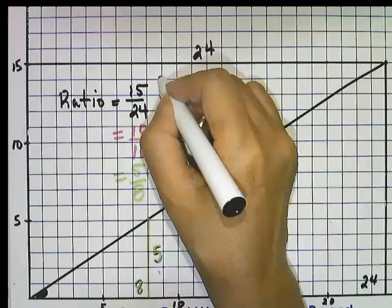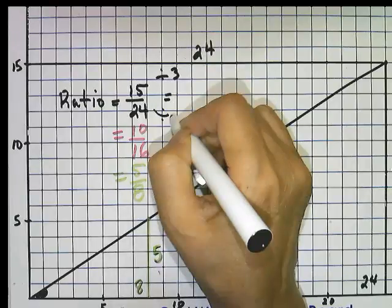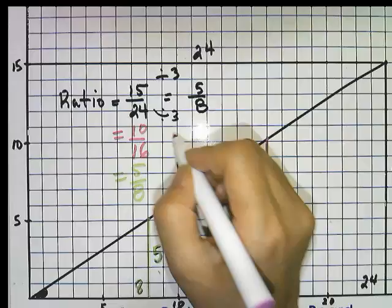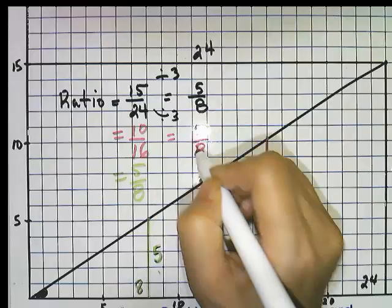15 over 24, if you reduce by 3, divide by 3, then you will get 5 over 8. As well as if you reduce the other fraction, 10 over 16, divide by 2, you'll get 5 over 8. And of course 5 over 8 is already in simplest form.